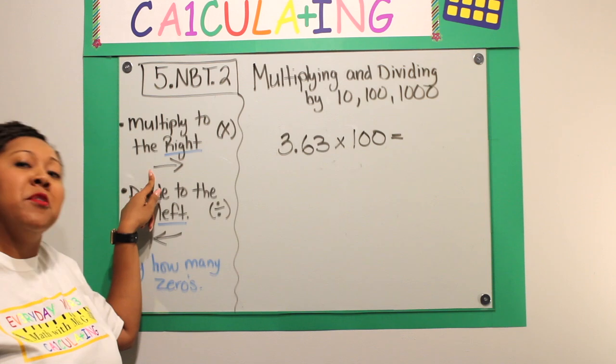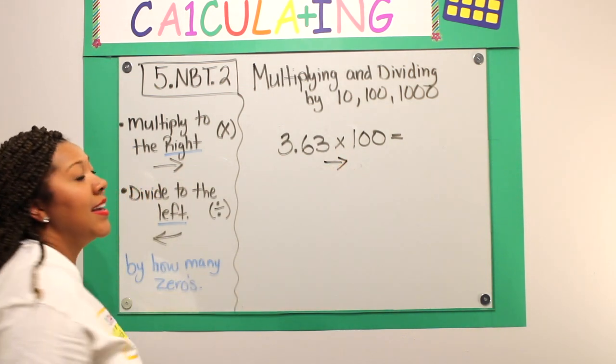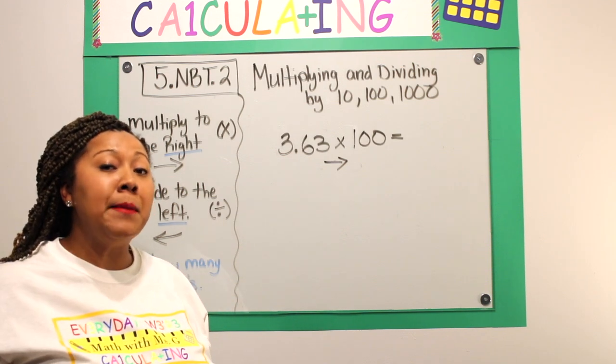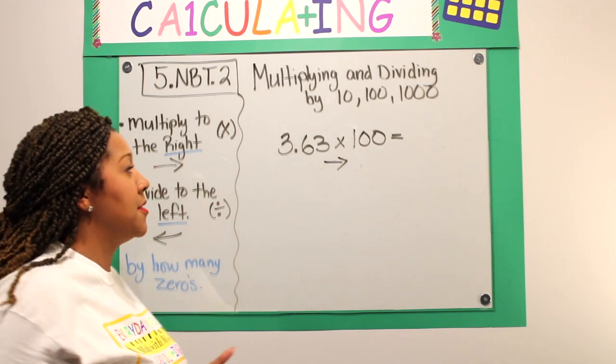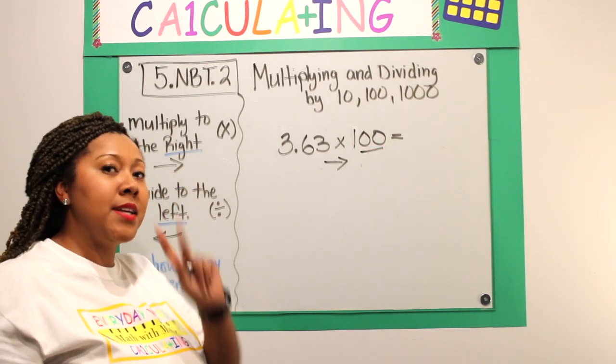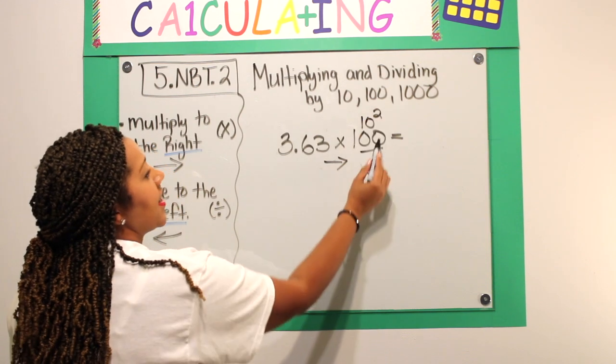Now, the number of zeros tell you how many times you're going to move that decimal to the right. Here, I have two zeros. So, I'm going to move two places to the right. This is also called 10 to the second power.